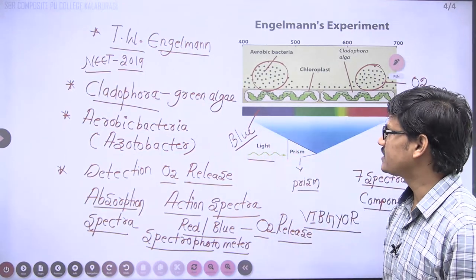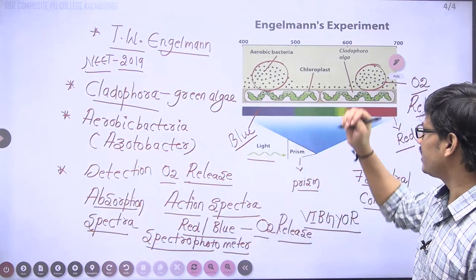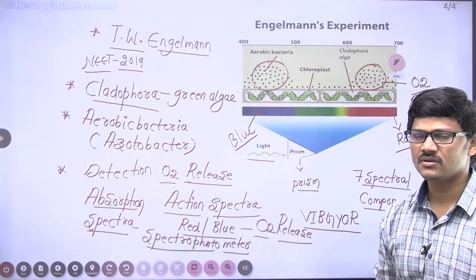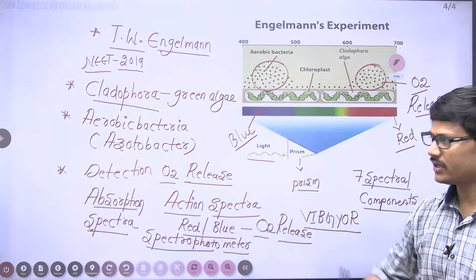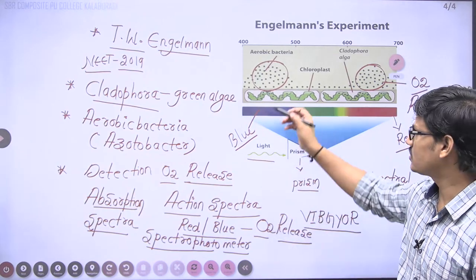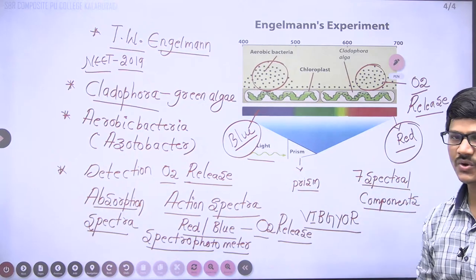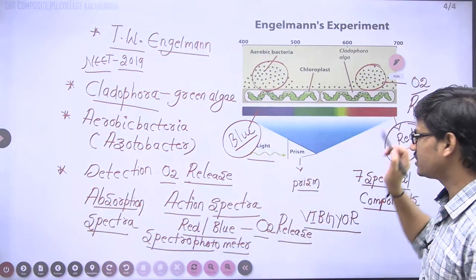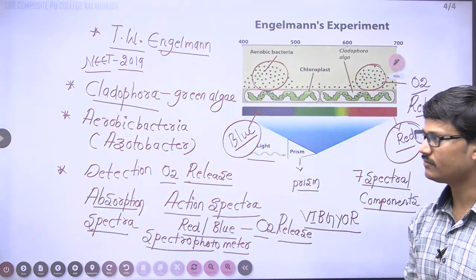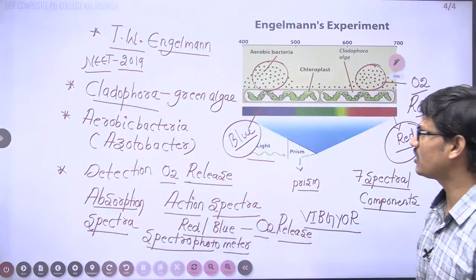A NEET 2019 question involved Engelmann's experiment: a scientist maintained Cladophora along with Azotobacter — when the experiment was conducted, in which spectra did more bacteria accumulate? The answer is in blue radiation and red radiation. Blue and red radiations are the action spectra and roughly resemble the absorption spectra of Chlorophyll A and B.